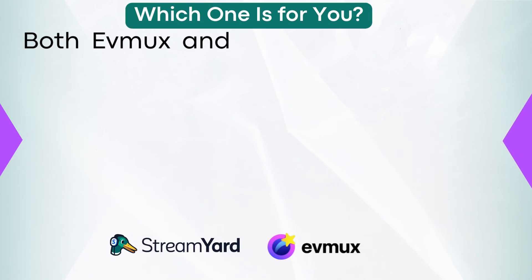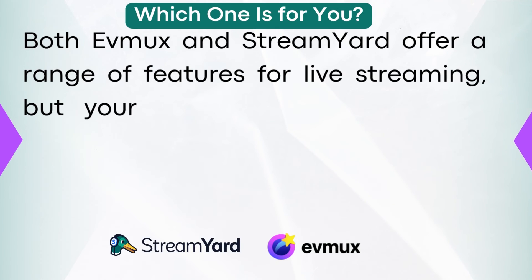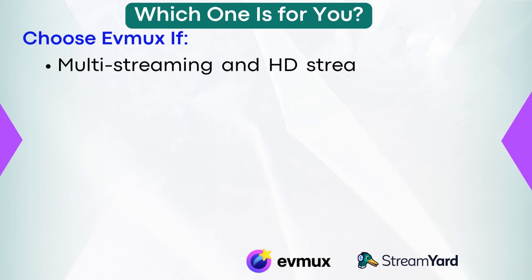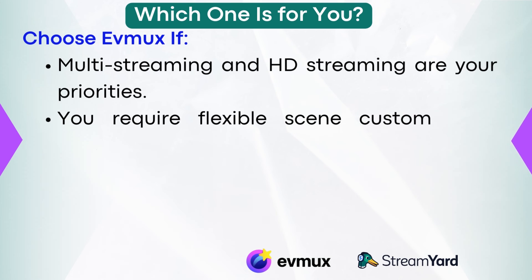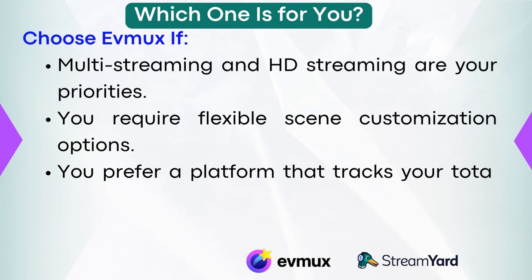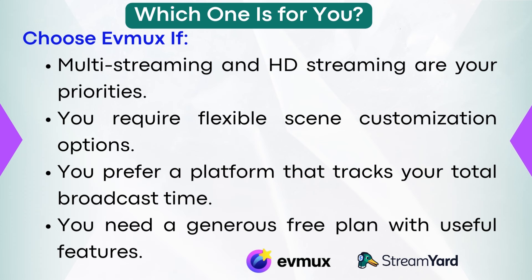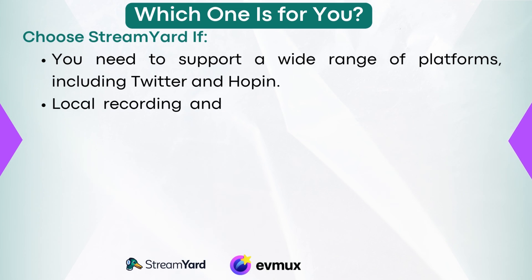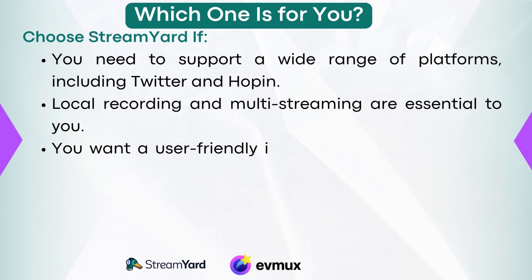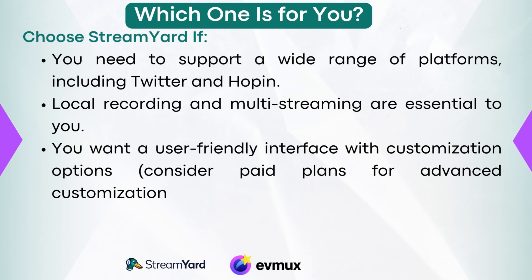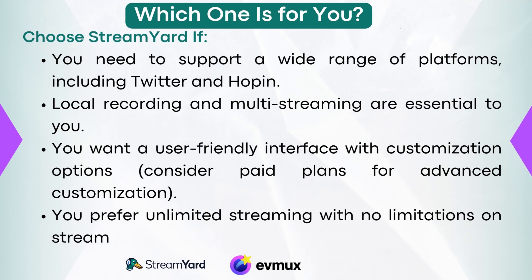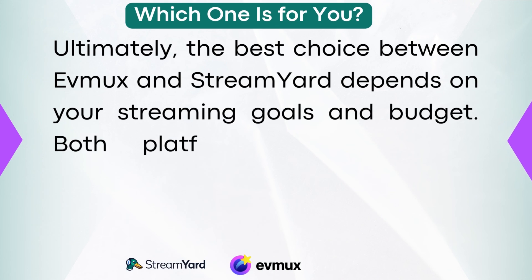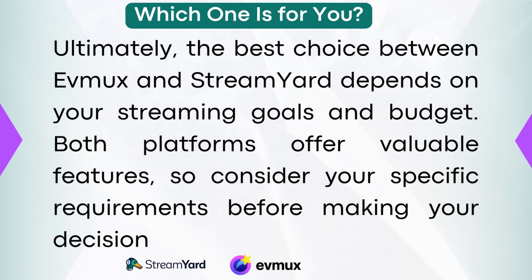Which one is best for you? Choose EVMux if multi-streaming and HD streaming are your priorities, you require flexible scene customization, you prefer a platform that tracks your total broadcast time, and you need a generous free plan with useful features. Choose StreamYard if you need to support a wide range of platforms including Twitter and Hopin, local recording and multi-streaming are essential, you want a user-friendly interface with customization options, or you prefer unlimited streaming with no limitations on stream length. Ultimately, the best choice depends on your streaming goals and budget.